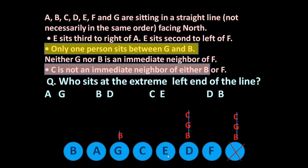So the positions of all seven persons are now fixed: B, A, G, C, E, D and F from left to right. Now you can answer the question: who sits at the extreme left end of the line? The extreme left position is occupied by B. So the answer is B.